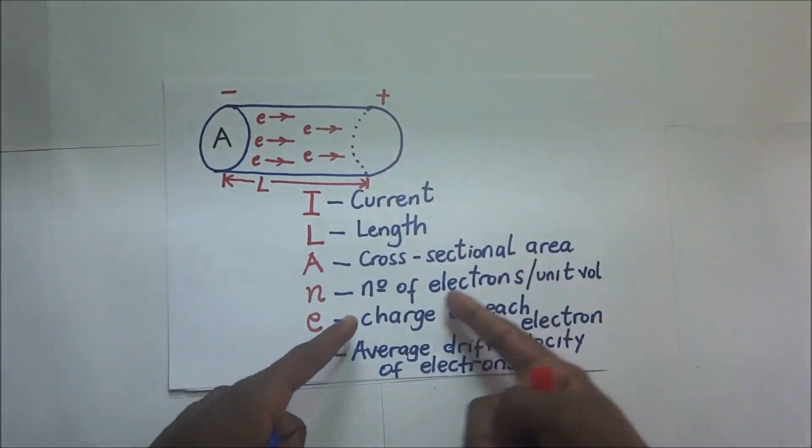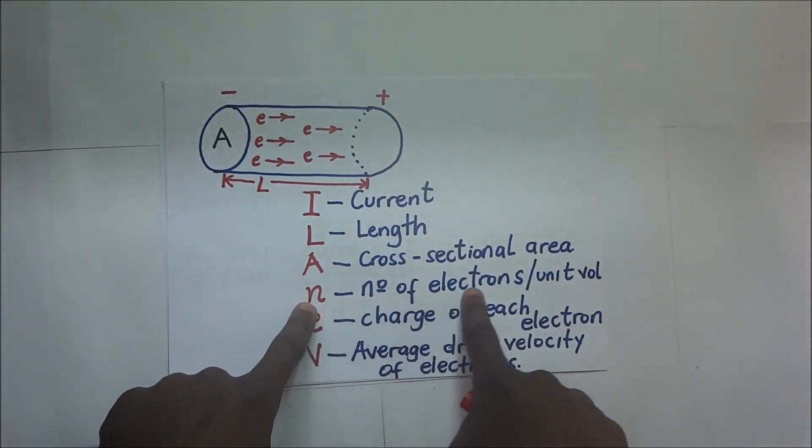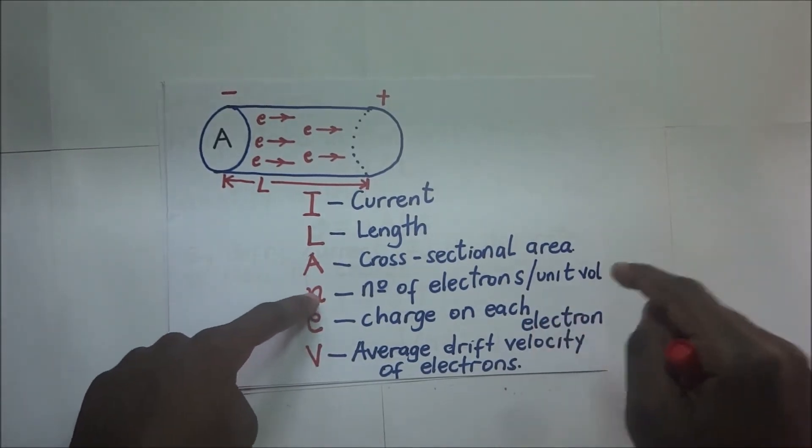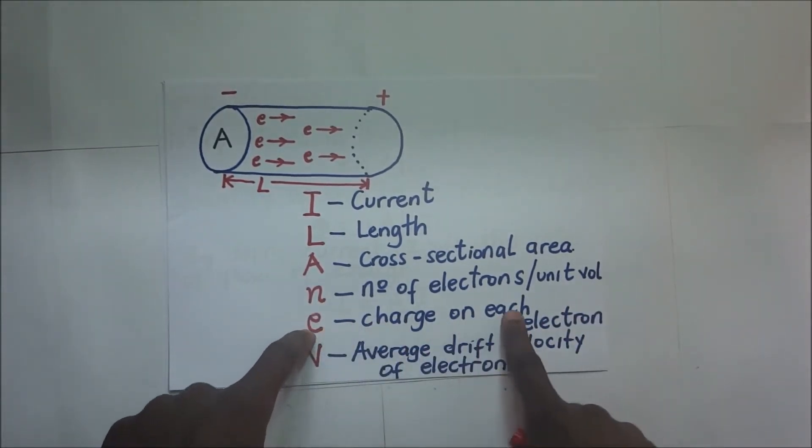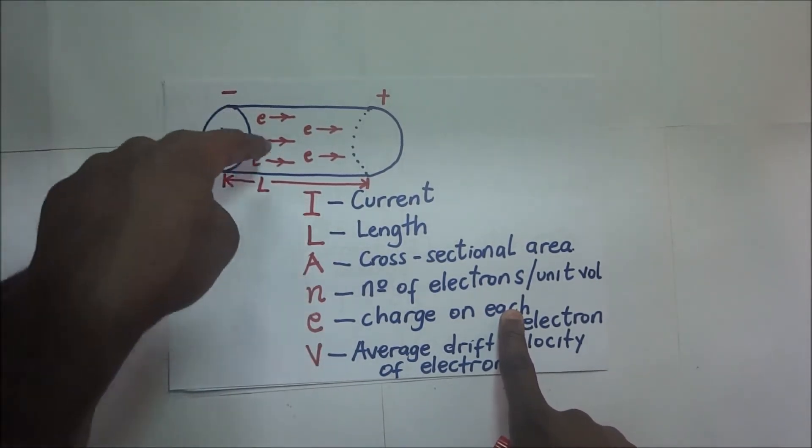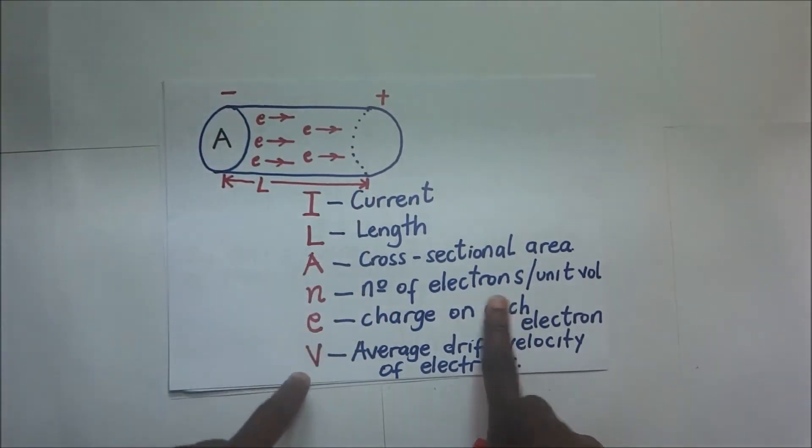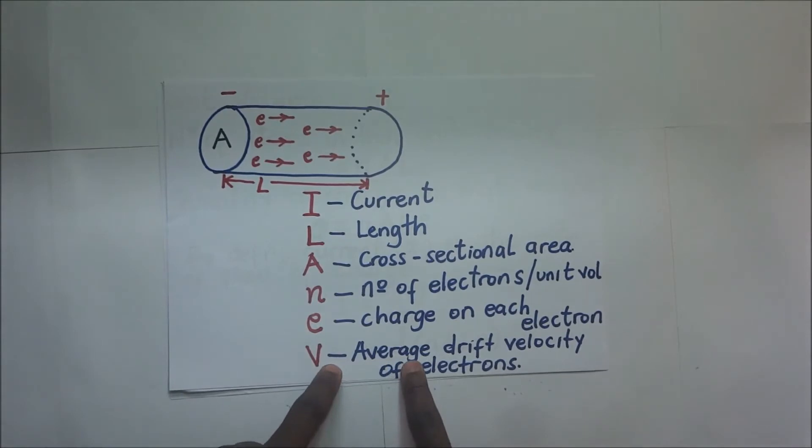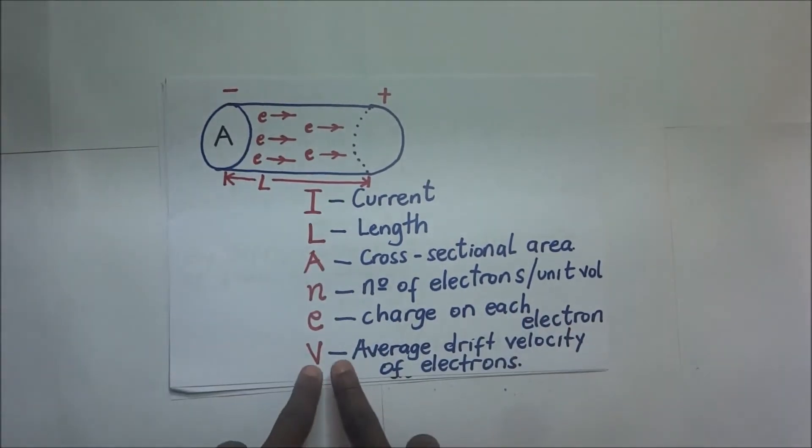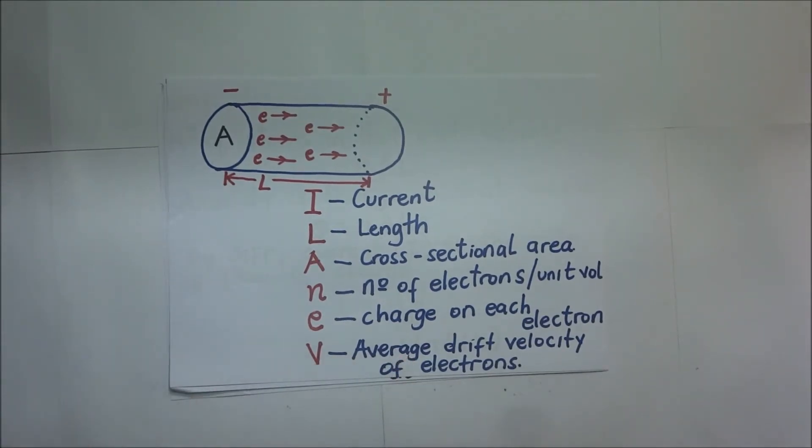This is going to become our unit volume that we've chosen. It's like a small portion we've cut off from the wire. This is going to be our unit volume. And so N will represent the number of electrons in that unit volume or the number of electrons per unit volume.